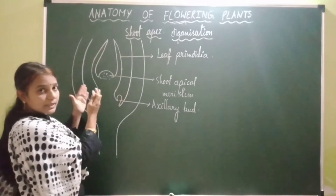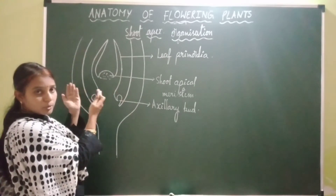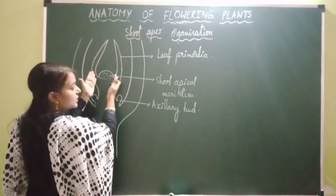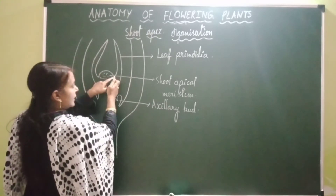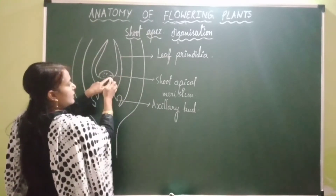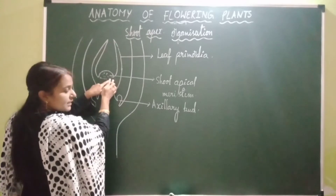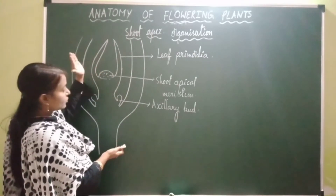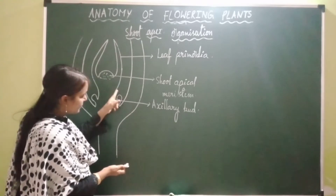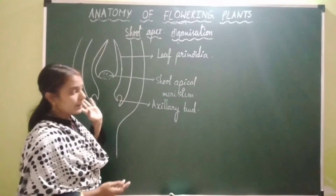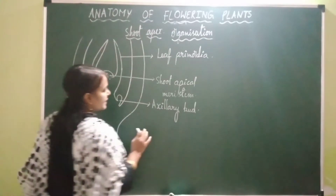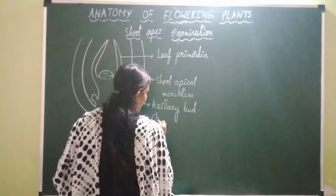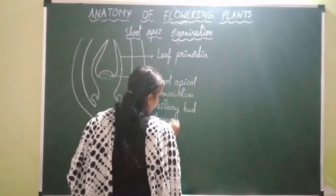The cells formed towards the lateral side flank the shoot apical meristem and develop into leaf primordia. Some cells left behind during shoot growth become the axillary part, which later develops into a new branch or flower.